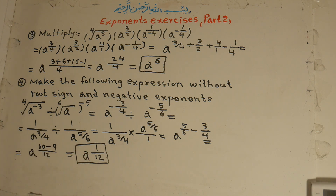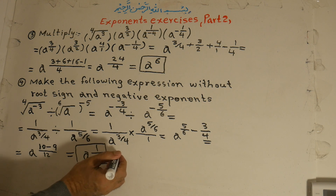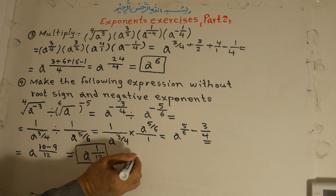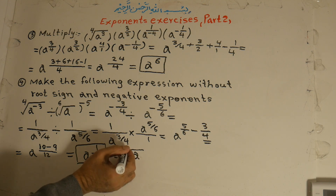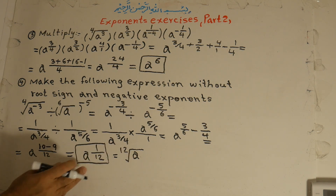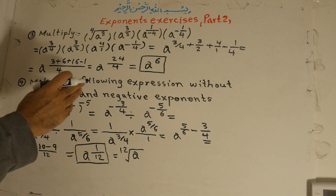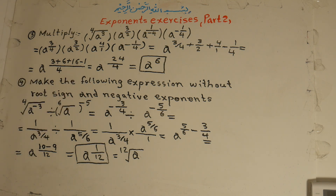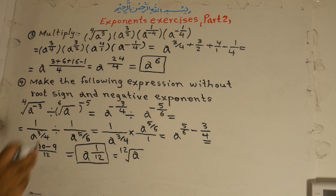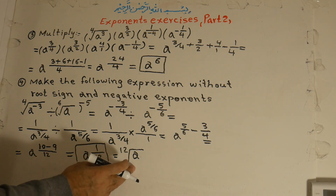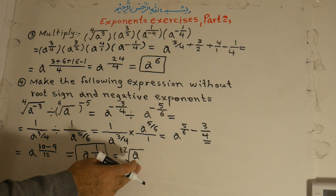And 1 over 12 means the 12th root. We can also write this as a under the 12th root. This is the final answer because the exercise asks us to write the expression without negative exponents and without a root sign — though we can also express it in root form as extra information.